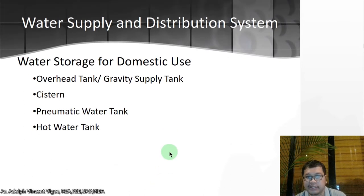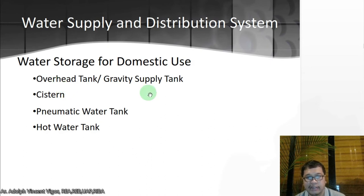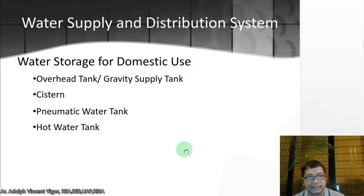Let's go back to water supply and distribution systems. These are the water storage options for domestic use: you have your overhead tank or gravity supply tank, which uses the force of gravity to drive water through your system.